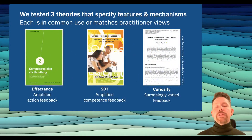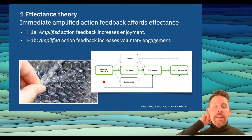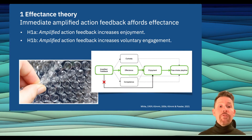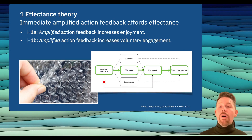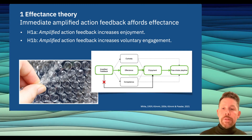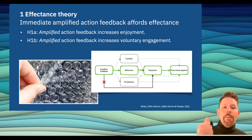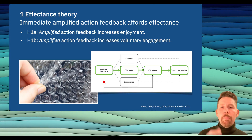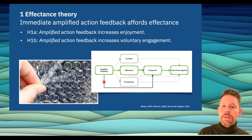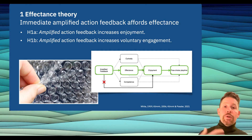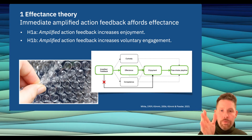To address this gap, we tested three specific theories that specify concrete features and mechanisms. The first theory is effectance theory, originally introduced by Robert White, the forefather of intrinsic motivation in psychology, but particularly appealed to by media psychologist Christian Klimt to explain the appeal of games. Klimt says that at the immediate level of moment-to-moment input-output loops, seeing amplified consequences of actions already gives us a positive experience of agency or effectance. So amplified feedback should increase enjoyment, load onto effectance, which loads onto enjoyment, and then onto free choice playtime.